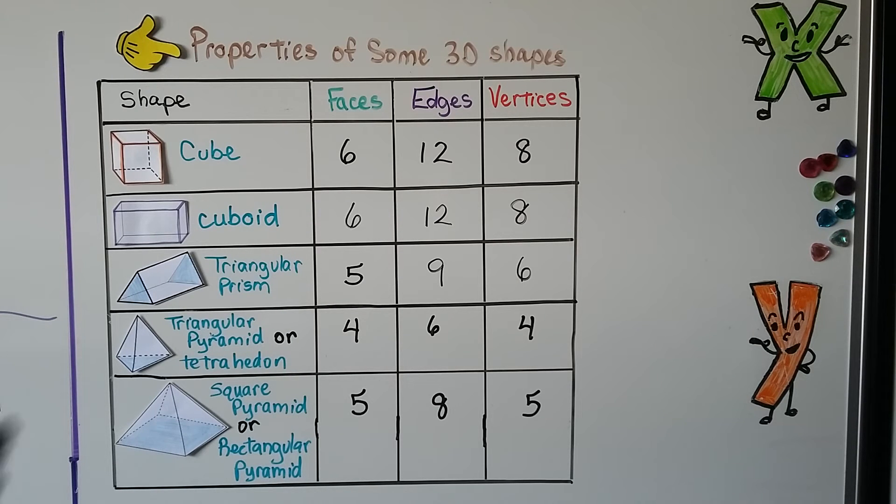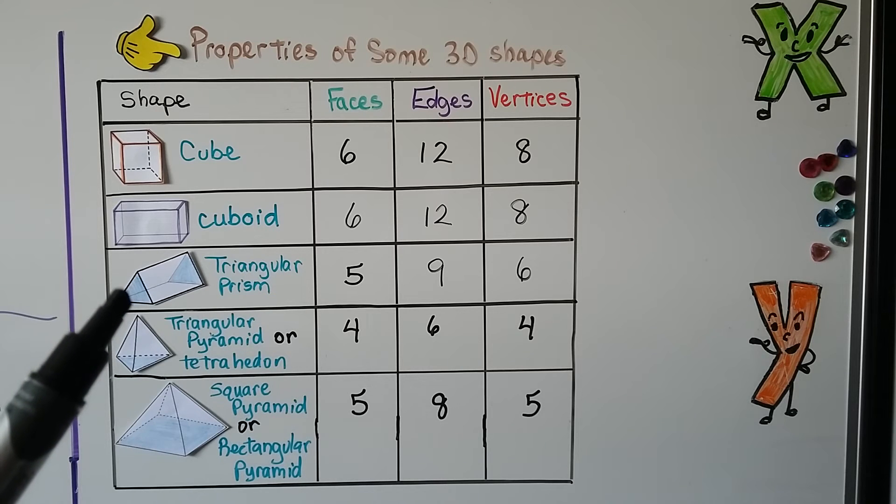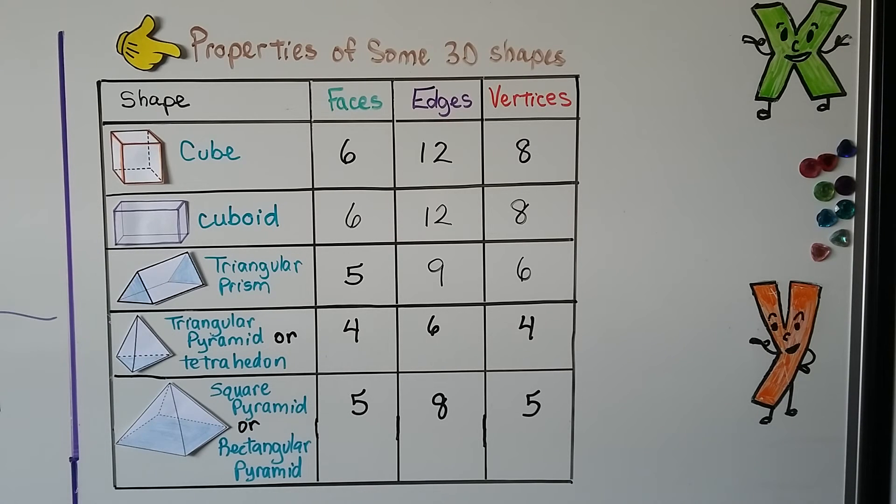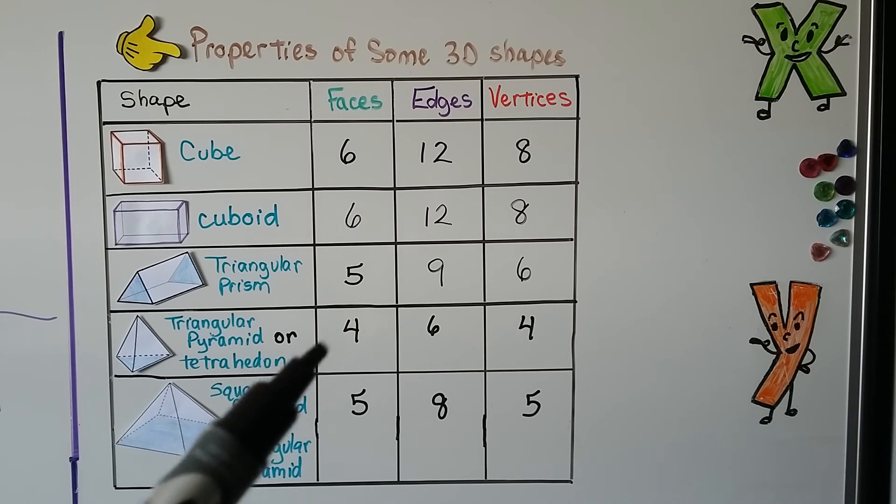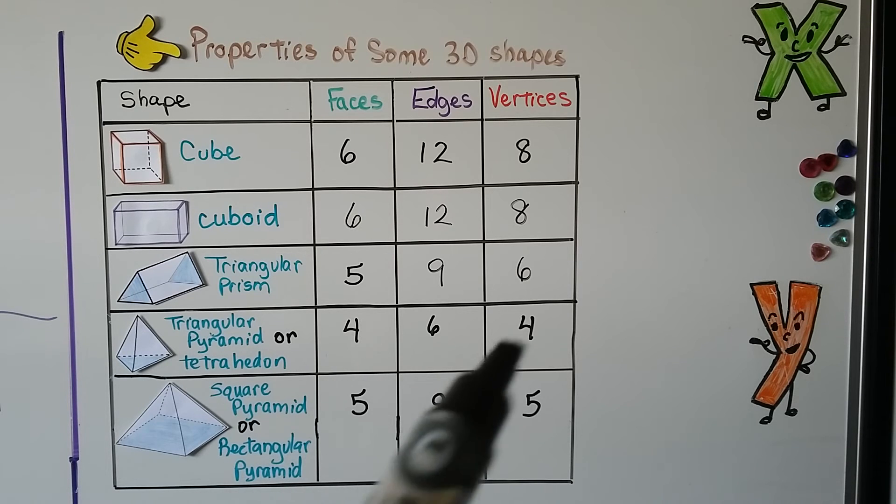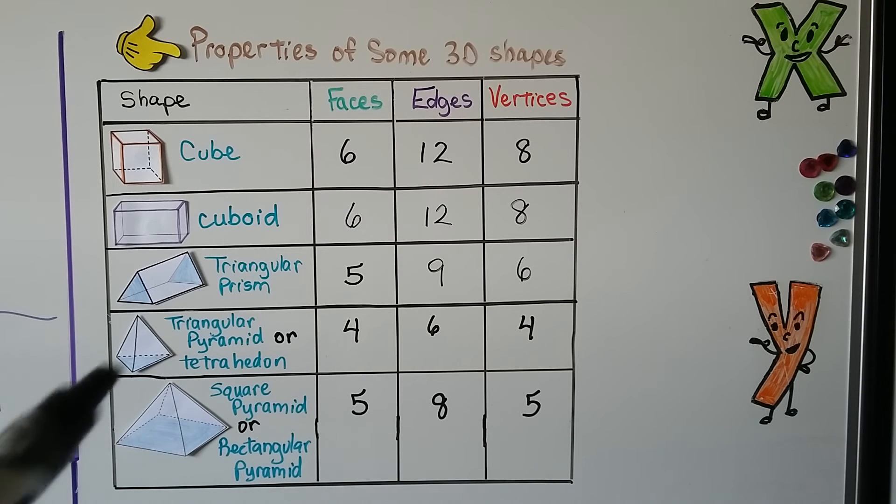A triangular prism has 5 faces, this one in the front, that one in the back, and the 3 going around it. It's got 9 edges, there's 9 line segments connecting those faces. It's got 6 vertices, 6 little corners. For a triangular pyramid, or tetrahedron, it's got 4 faces, the 3 going around it and the one at the bottom, which we can also call the base. It's got 6 edges and 4 vertices, the 3 going around and the one on top, that apex.